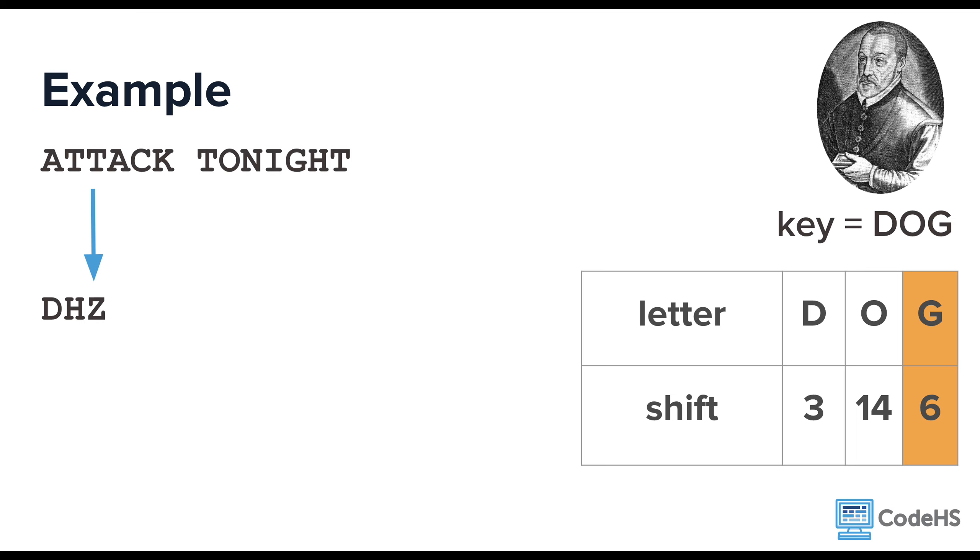Now, here you may notice that the plain text letter T is encrypted to 2 different letters using this method. Well, that will definitely help hide the message. We continue this pattern of 3, 14, 6 until we get the full ciphertext.